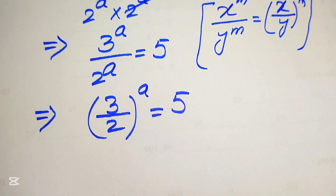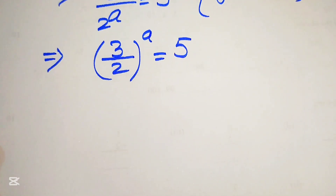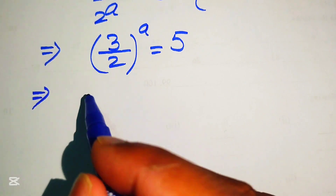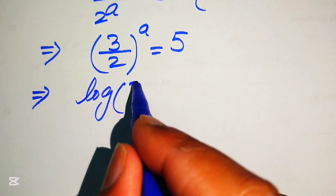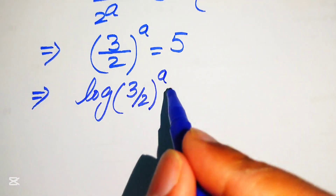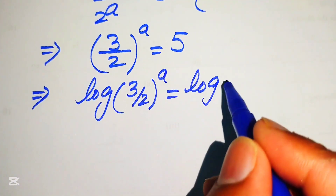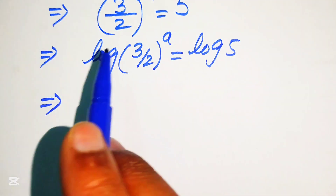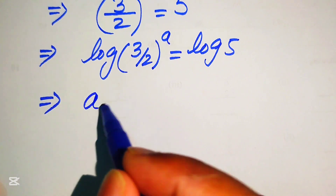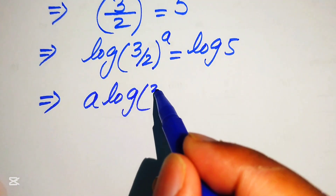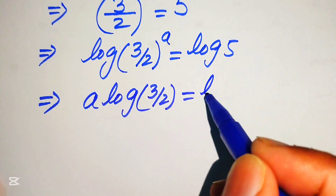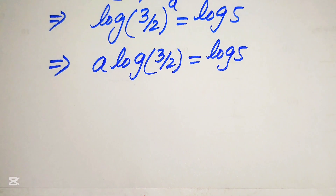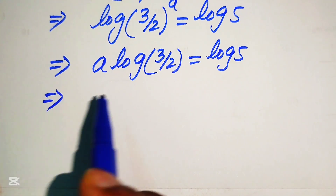Since we are solving for the values of a, we take the log on both sides. Applying log on both sides gives log of (3/2) to the power of a equals log of 5. In the next step we move the exponent a to the front of the log, giving a times log(3/2) equals log 5.